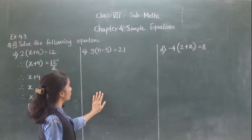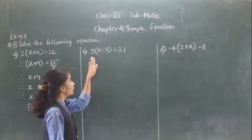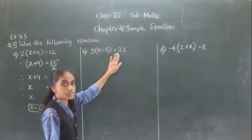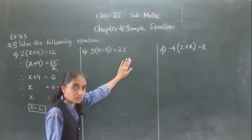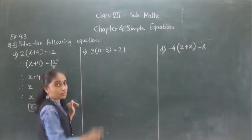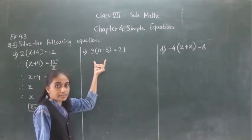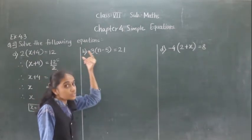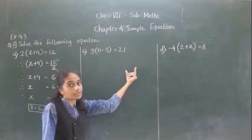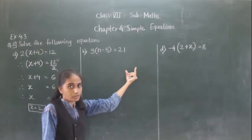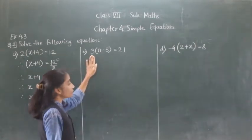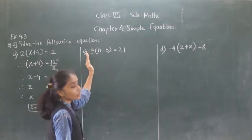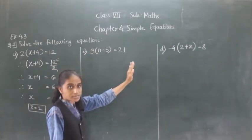Let's try the next question. 3 into bracket N minus 5 is equal to 21. Now 3 is here working as multiplication on the left hand side. If we transfer 3 to the right hand side, it will become division. So we are going to transfer 3 to the right hand side.